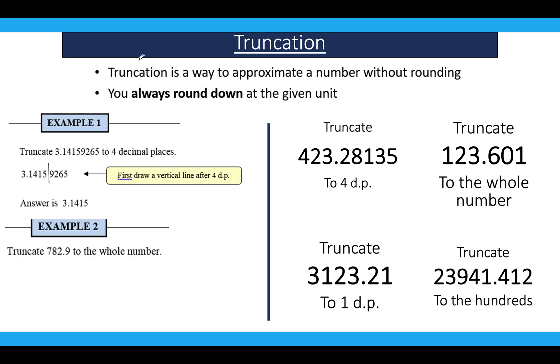Example 2 over here, 782.9 to the nearest whole number. You literally just slice it off after the 2. So we put a line and then we take everything after the decimal point out, so our answer is 782.